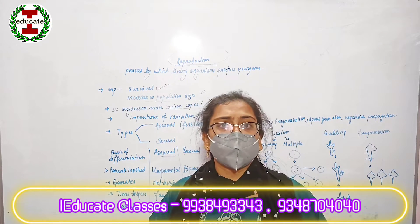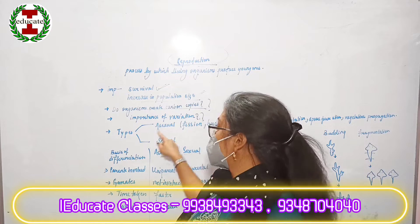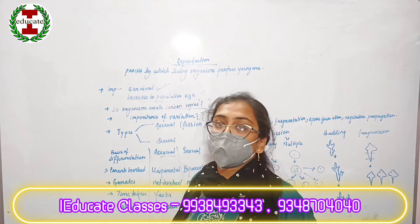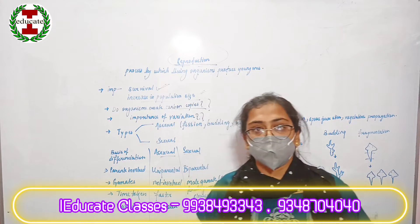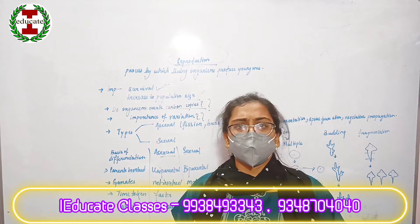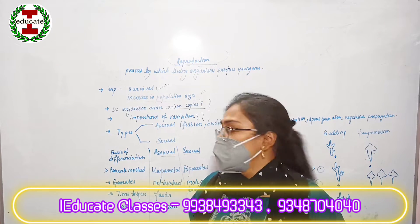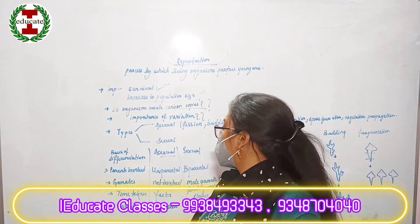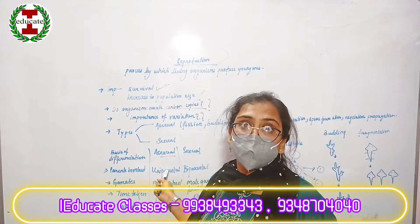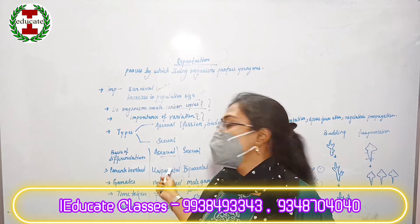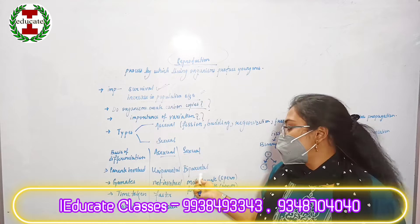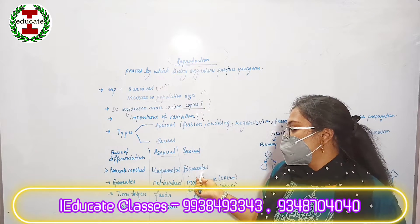How many types of reproduction are there? There are two types of reproduction. One is asexual reproduction and the second one is sexual reproduction. Asexual reproduction basically involves a single parent — it is uniparental — whereas sexual reproduction is biparental.